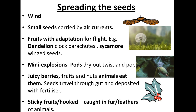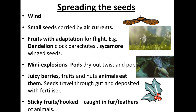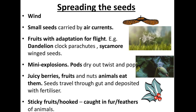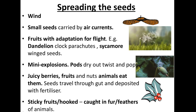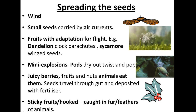There are many different types of adaptations of different species to spread their seeds. A lot of seeds are spread by wind — very small seeds can simply be carried by air currents. Some seeds have special adaptations, such as the dandelion's little parachutes which get caught in the wind and carried along. Sycamore trees have wing-like structures that spin in the wind so they can land further away.